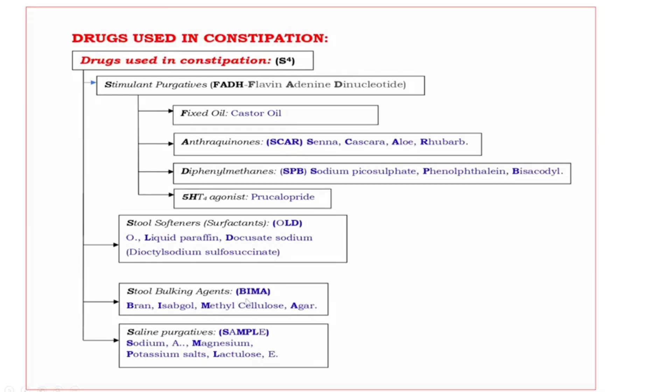Next, stool bulking agents. The drugs are BMA. Bold letters are BIMA. B: Bran. I: Ispaghula. M: Methylcellulose. A: Agar.